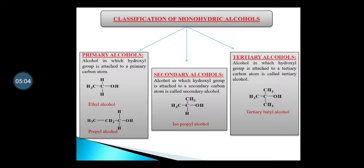For example, consider ethyl alcohol. Observe the carbon to which the OH group is attached. You can see how many carbons are directly attached to this carbon — only CH3 is directly attached. A carbon with only one other carbon directly attached is called a primary carbon. If the OH group is on a primary carbon, it is a primary alcohol. Similarly, in propyl alcohol, the carbon bearing the OH group has only one carbon (CH2) directly attached, so it is also a primary alcohol.